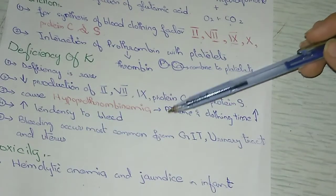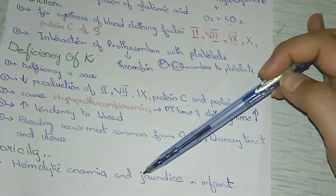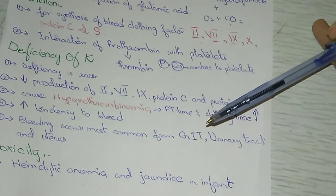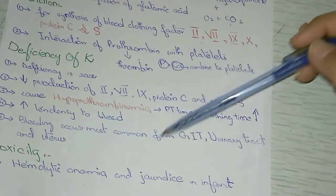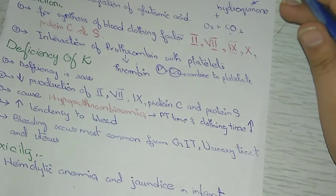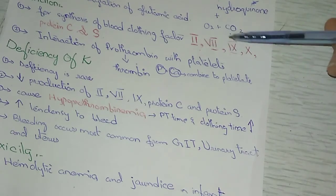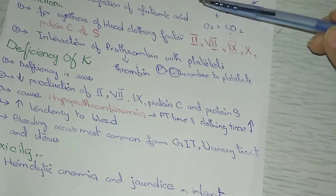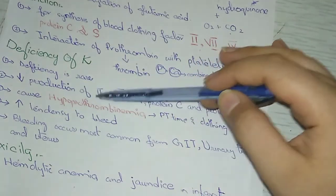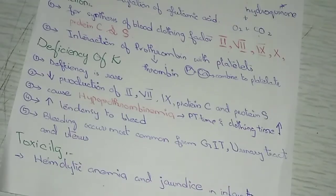Regarding toxicity: prolonged administration of large doses of vitamin K can produce hemolytic anemia and jaundice in infants due to toxic effects on the membrane of red blood cells. To summarize: vitamin K acts as a coenzyme for the carboxylation of glutamic acid in clotting factors 2, 7, 9, 10, protein S, and protein C. Deficiency is very rare and causes hypoprothrombinemia, and toxicity causes hemolytic anemia and jaundice in infants.